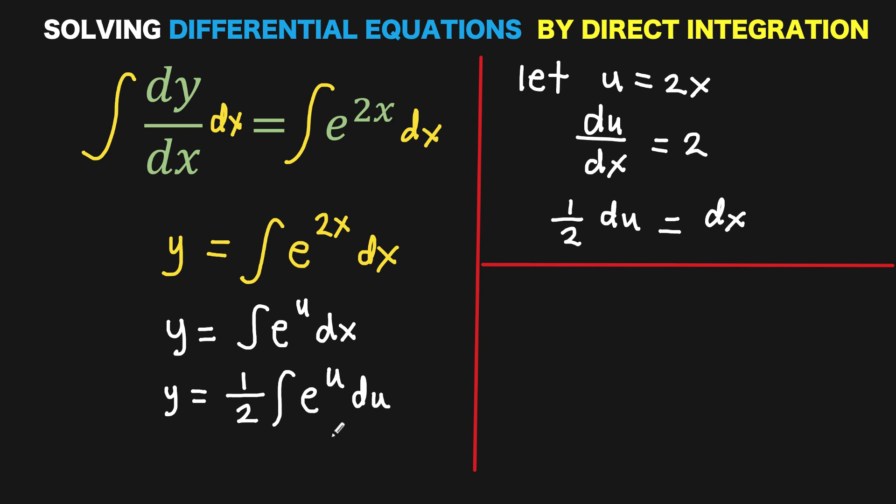Now our next problem is to find the anti-derivative of e to the u du. But we can use the formula. The formula for the anti-derivative of the exponential a to the u du is equal to a to the u over ln of the absolute value of a plus c.